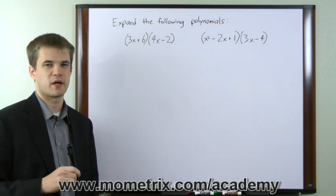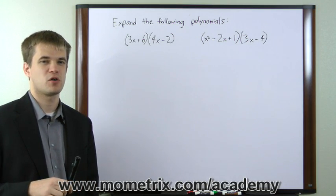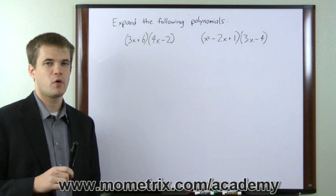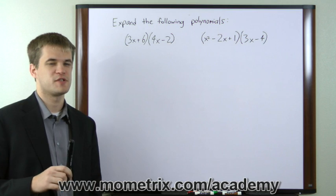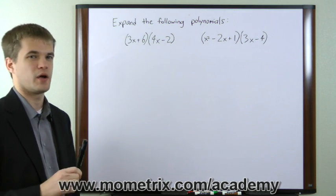The most common method for multiplying a pair of two-termed expressions is called the FOIL method. FOIL stands for first, outside, inside, and last.